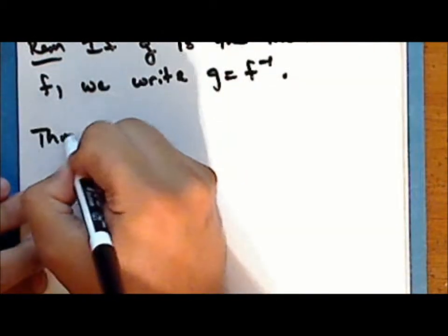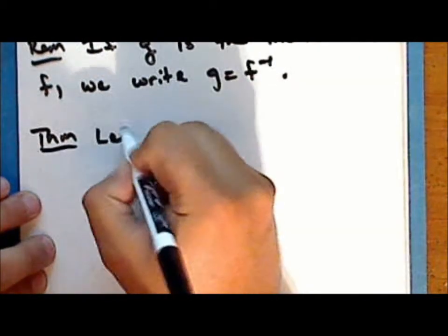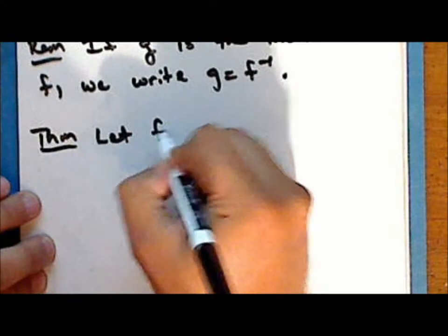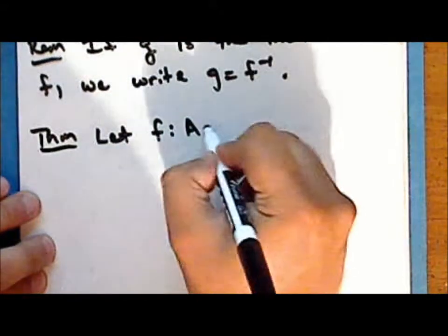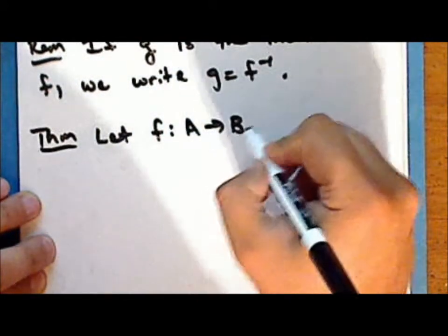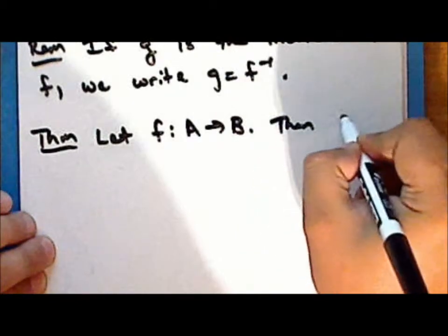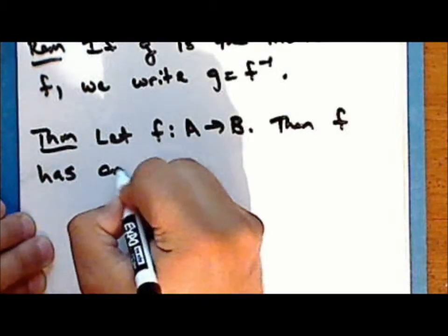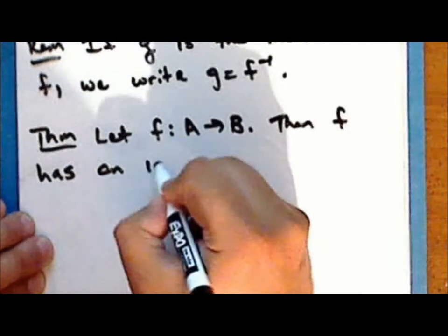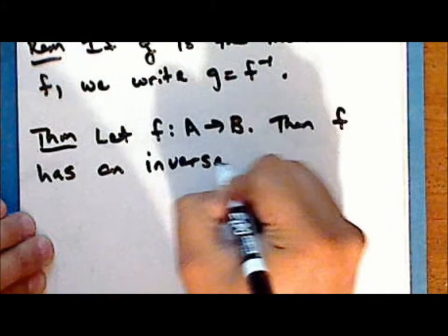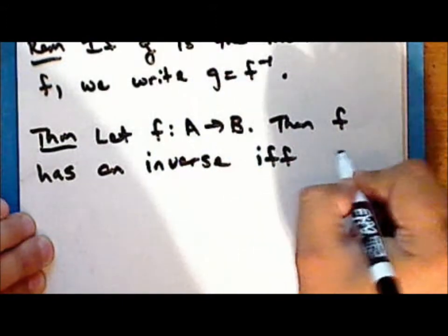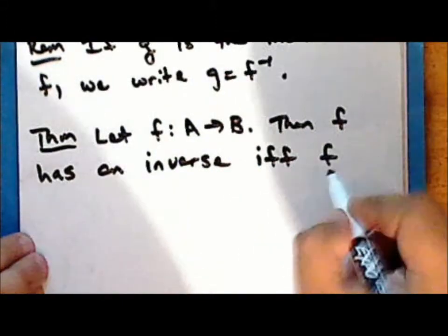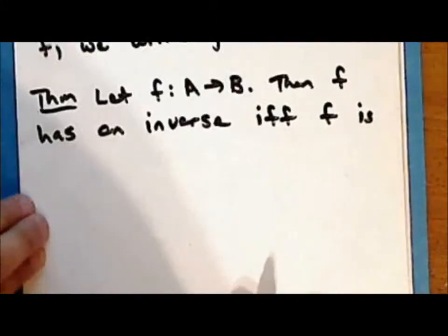We'll now prove the theorem: let f be a map from the set A into the set B. The function f has an inverse if and only if the function is a bijection.